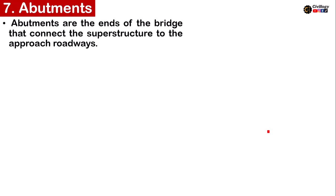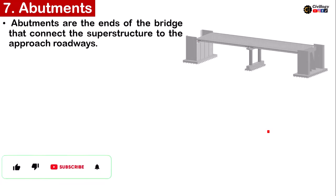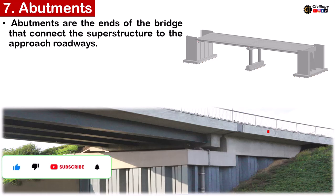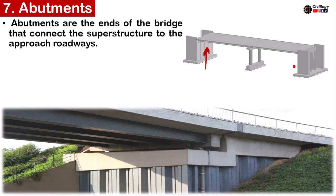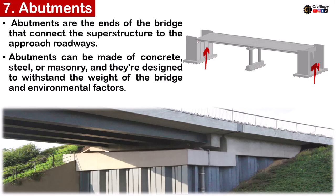Abutments. Abutments are the ends of the bridge that connect the superstructure to the approach roads. This is the part of the substructure which is called an abutment, basically located on the edges to connect the bridge with the roadways. Abutments can be made of concrete, steel, or masonry and are designed to withstand the weight of the bridge and environmental factors.